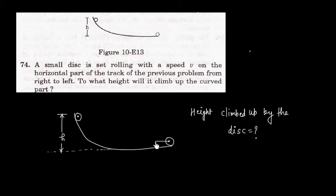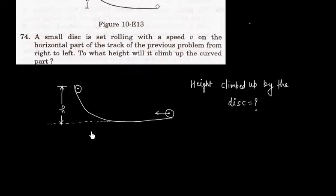This disk is set in pure rolling. This means point of contact will have zero velocity.